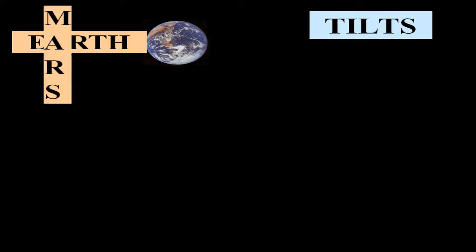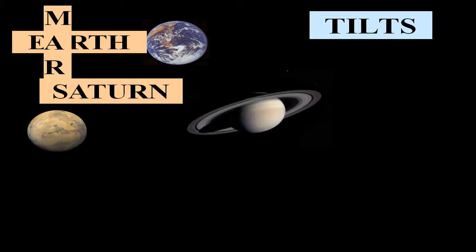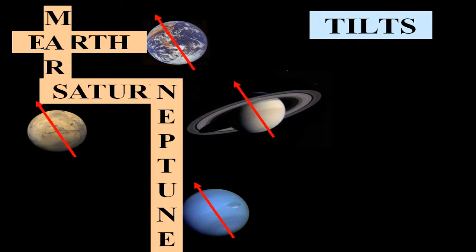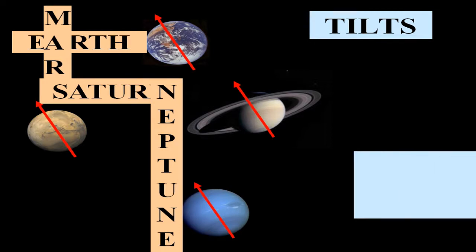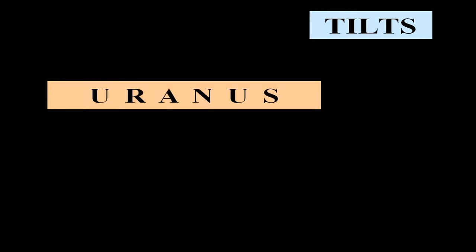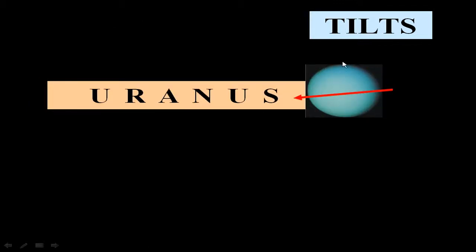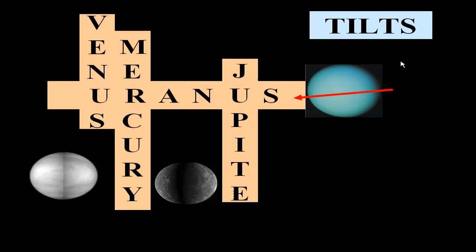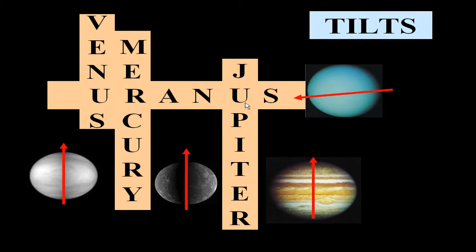Comparing the tilts of the Jovian planets: Earth has a 23.5 degree tilt, and Mars is pretty close with a 24 degree tilt. Saturn is also close with a 27 degree tilt, and Neptune has a 29 degree tilt. So in terms of these four planets, their tilts are in about the same range — very similar. Uranus, however, is tilted on its side by 98 degrees. Mercury, Venus, and Jupiter all have straight up and down tilts — no axis tilt at all. So Uranus is quite different from the other three.